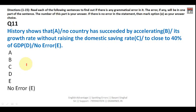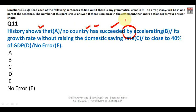Question eleven: 'History shows that no country has succeeded by accelerating its growth rate without raising the domestic saving rate to close to 40 percent of GDP.' Here 'succeeded' should be followed by the preposition 'in,' not 'by.' It should read 'no country has succeeded in accelerating its growth rate.' The answer is Part B: replace 'by' with 'in.'